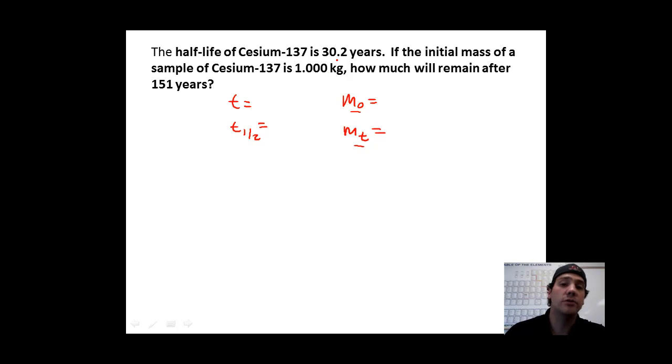The half-life of cesium-137 is 30.2 years. So that goes right here. The initial mass of a sample of cesium-137 is one kilogram. That's our initial mass. How much will remain after 151 years? So after 151 years, how much is there going to be?